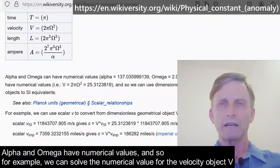Alpha and omega have numerical values and so, for example, we can solve the numerical value for the velocity object v.